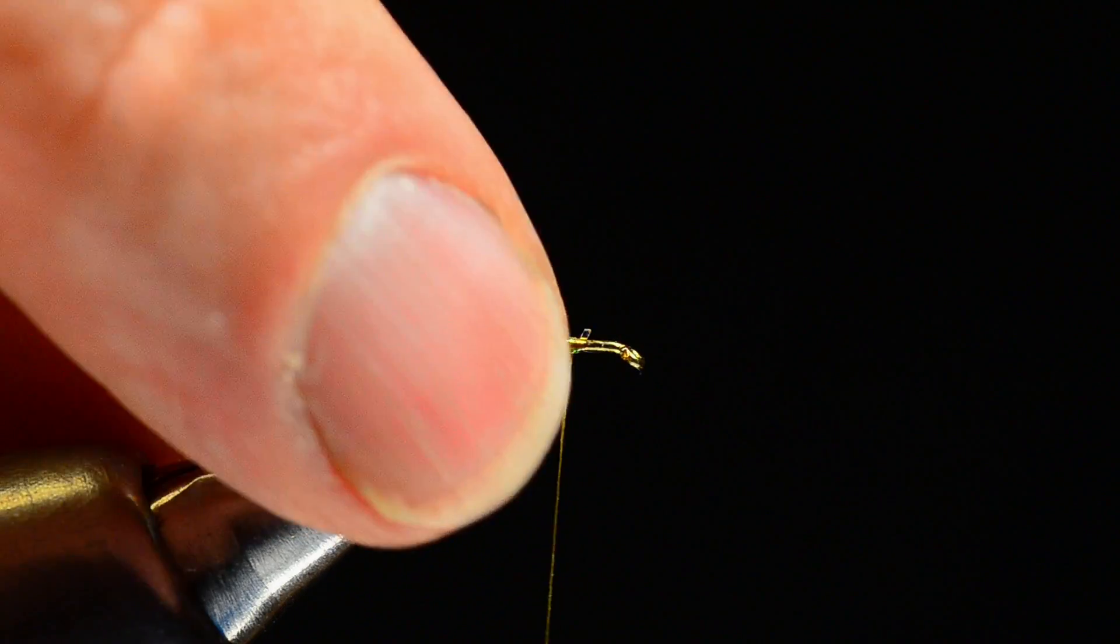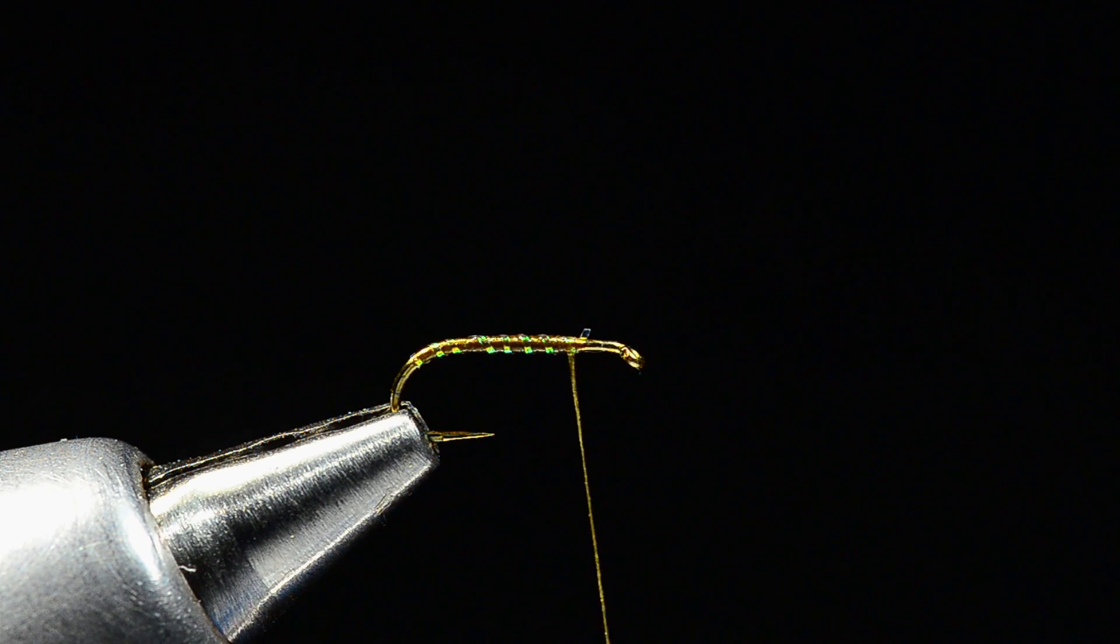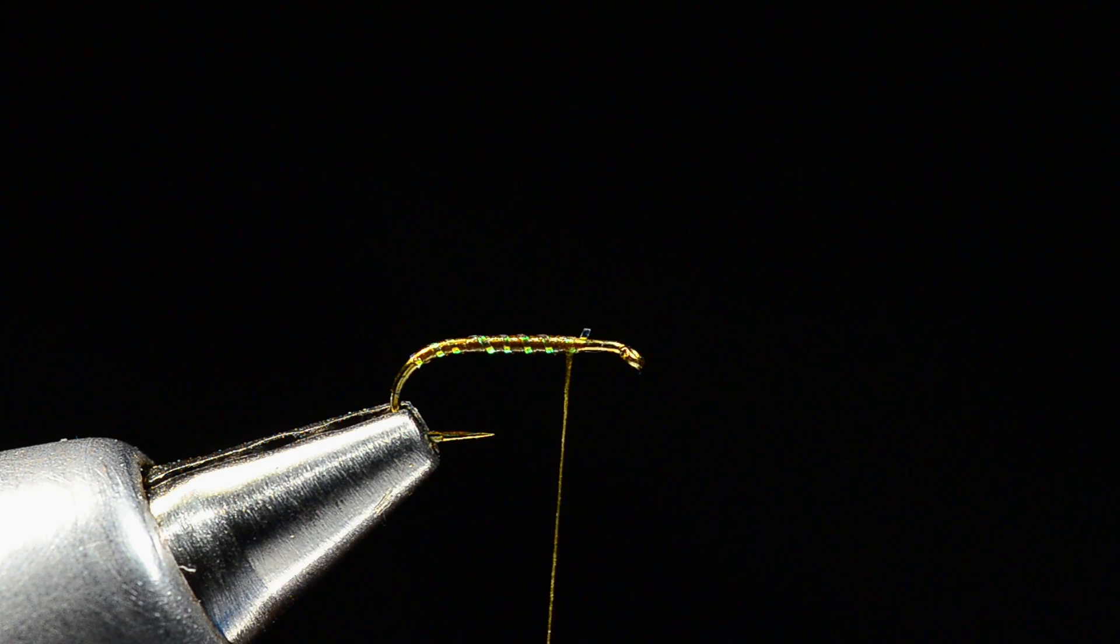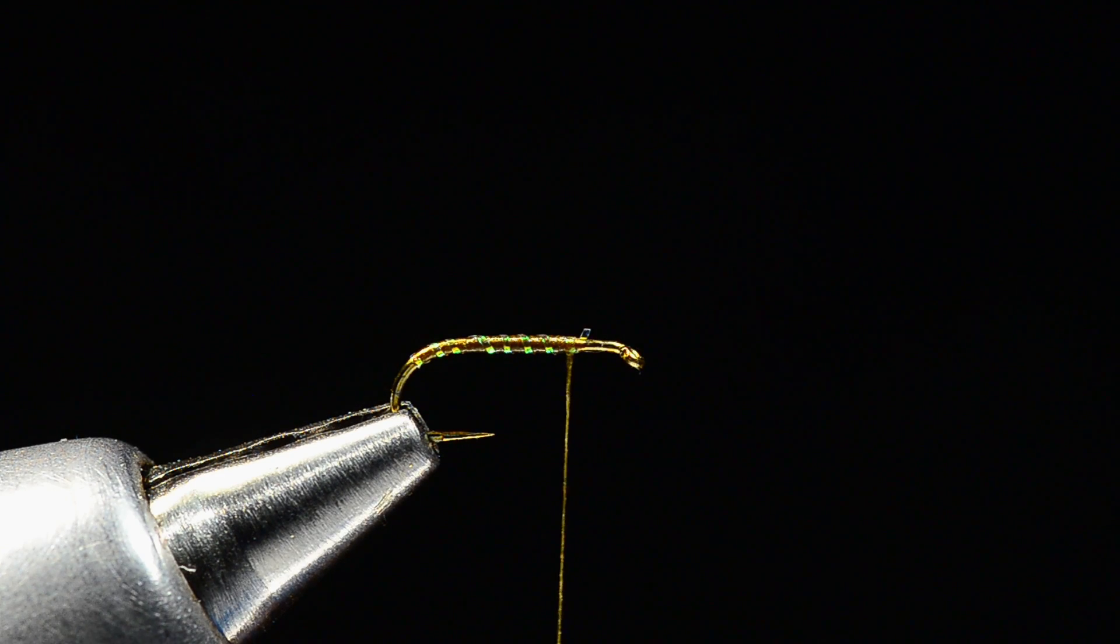One of the things with UV resin, I see it used in so many places these days and it's fantastic material, I'm not down on it at all, but packing it in on a dry fly and coating a dry fly body with a big heavy coat of that definitely has an effect on the flotation. So just going to use some head cement there.